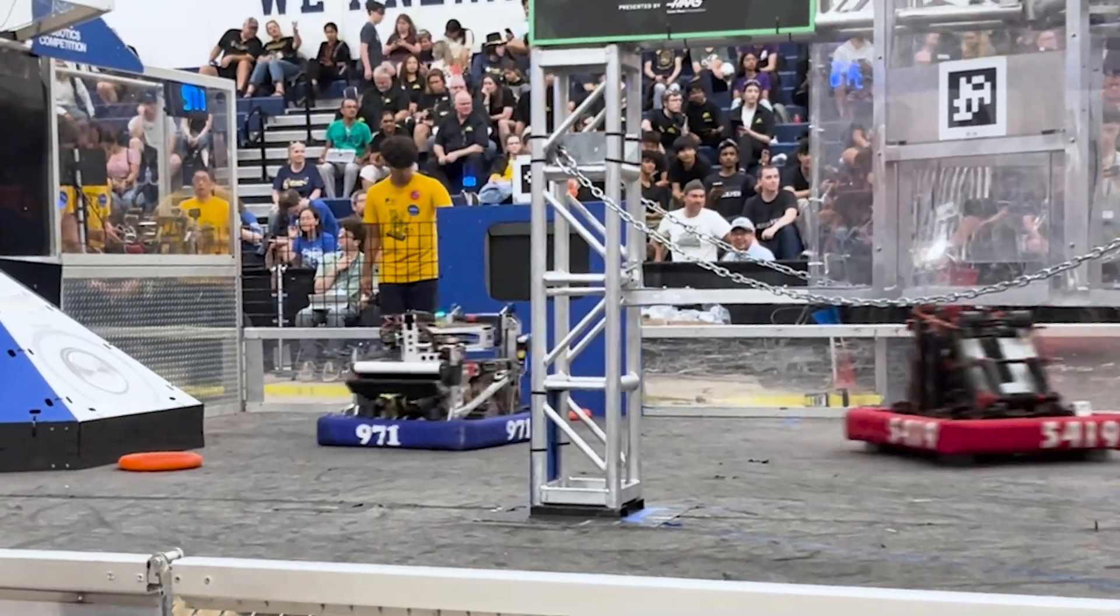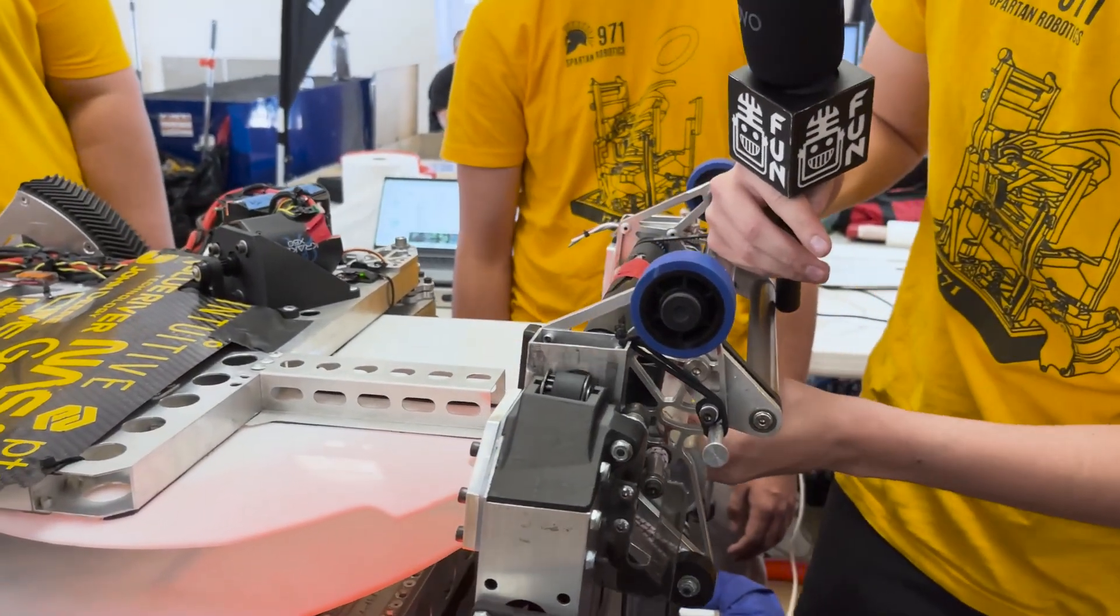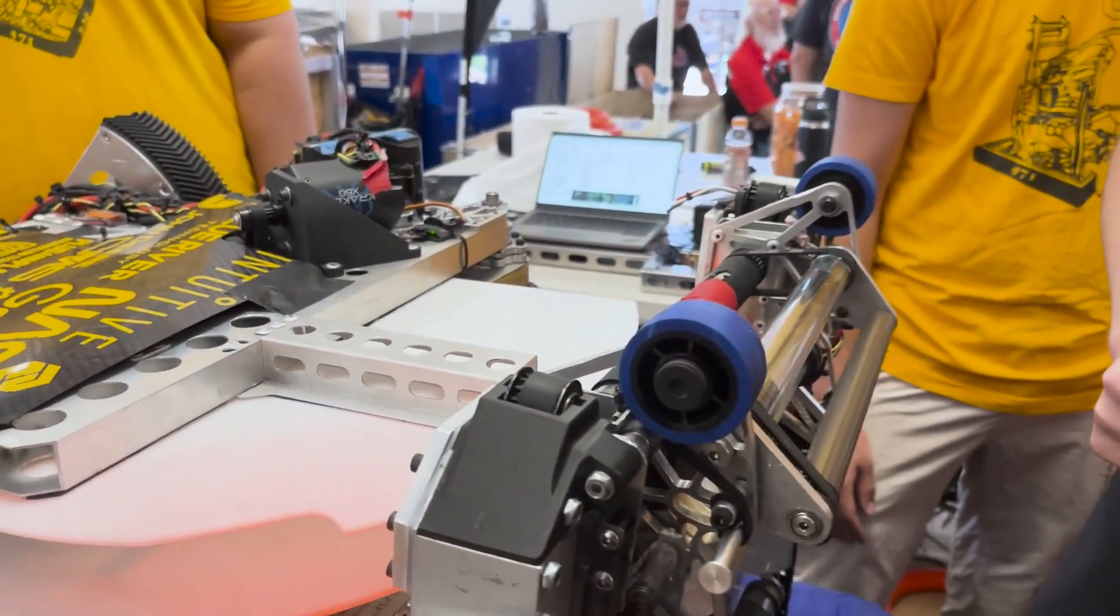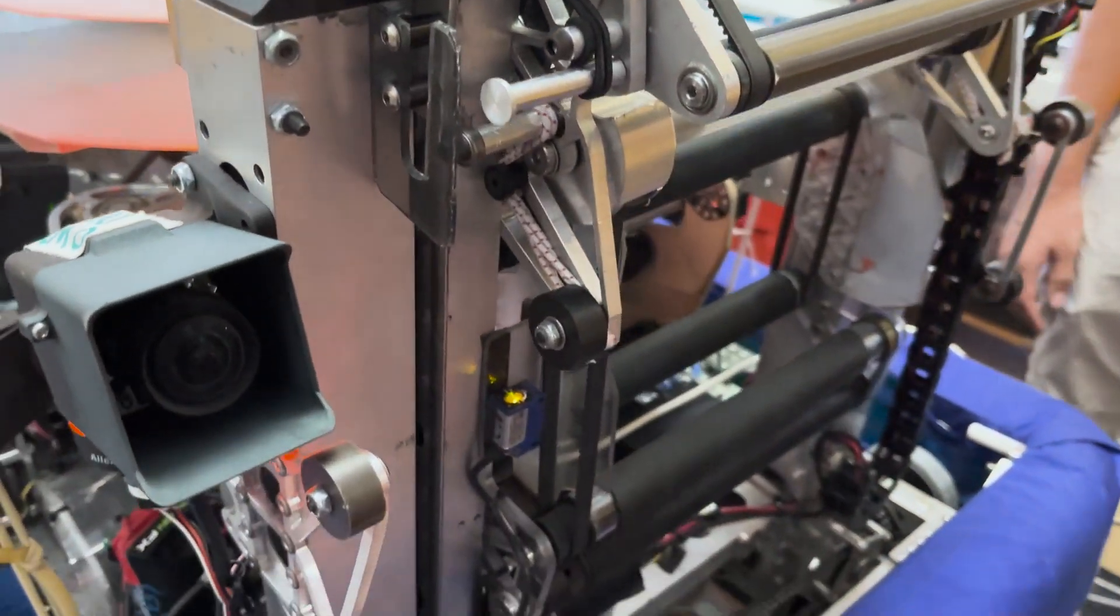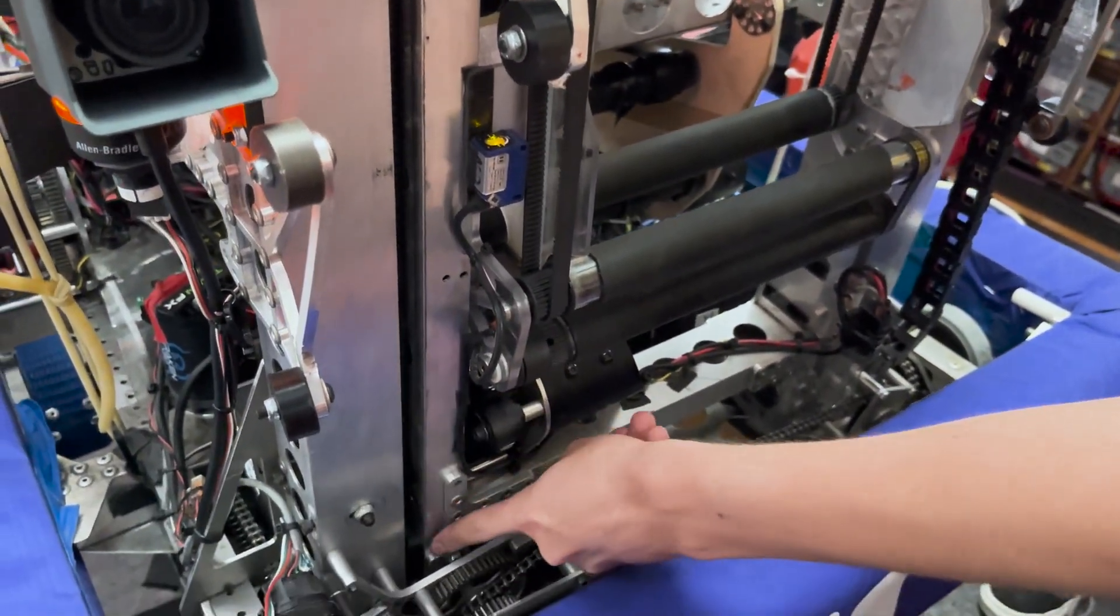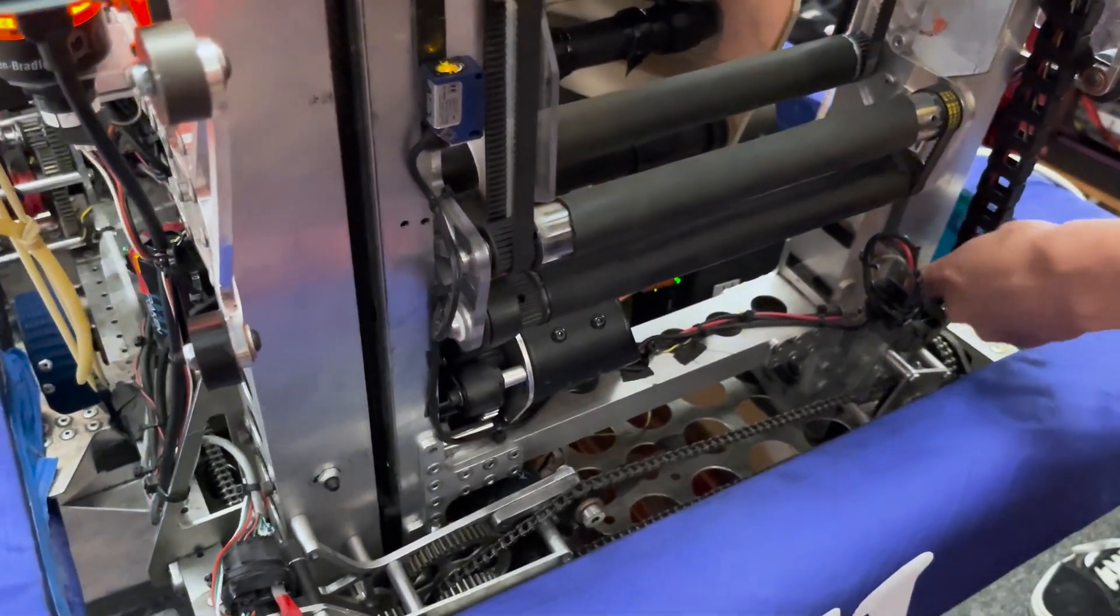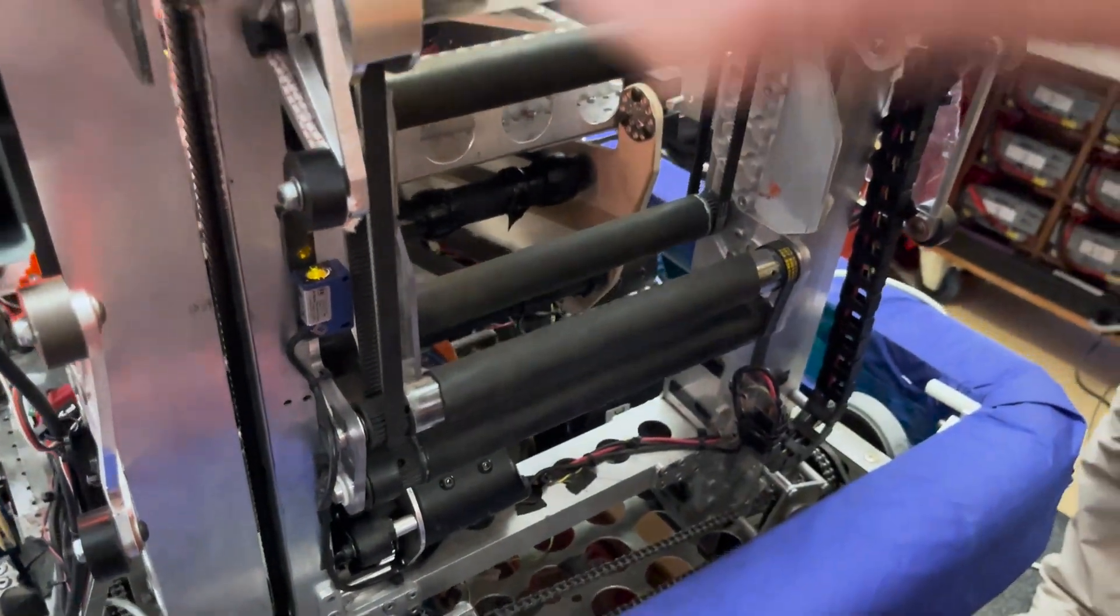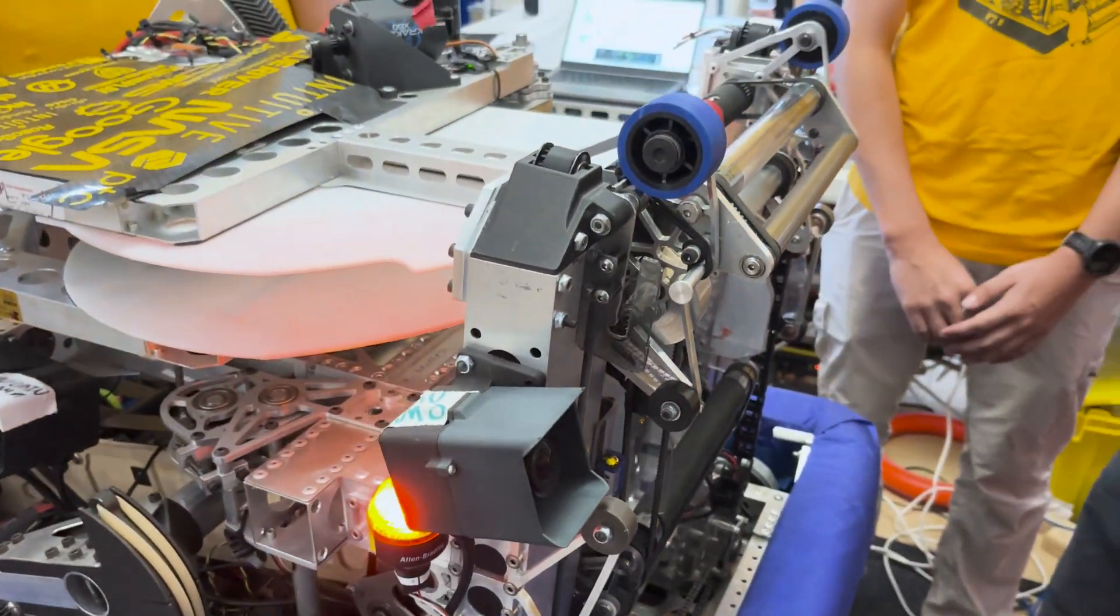In order to have the extend actually come up, we use these pulleys that run through here and attach onto this gearbox on both sides. The pulley attaches onto the extend with these 3D printed parts here, and we move the belt up and down whenever we want to move the extend up and down.